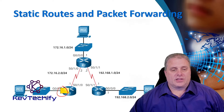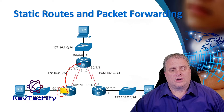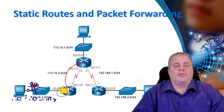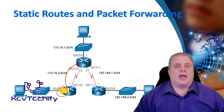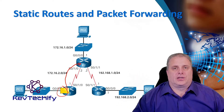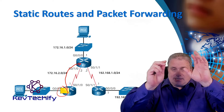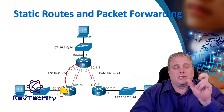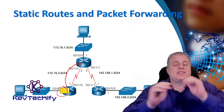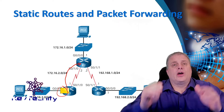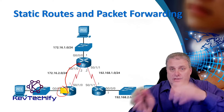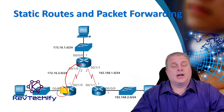It gets up to R2. R2 de-encapsulates the layer 2 frame off of it, looks at the destination layer 3 IP address. It sees that destination network address and looks through its routing table. Is there a static route for it? If there's a static route, we'll send it out the exit interface or next hop IP address down to router three.